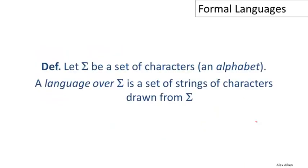So let's begin with a definition. A formal language has an alphabet — some set of letters Sigma — and then a language over that alphabet is just a set of strings of the characters drawn from the alphabet. Other kinds of languages would have different sets of strings, and in general, a formal language is just any set of strings over some alphabet.